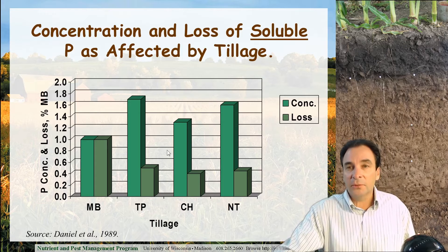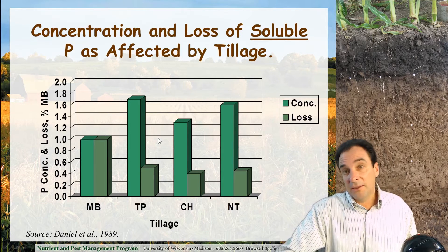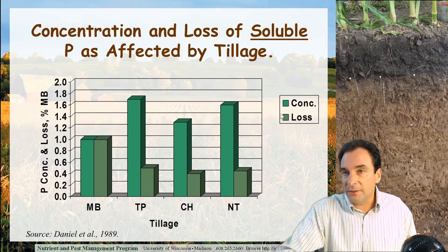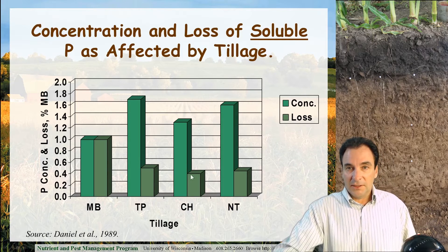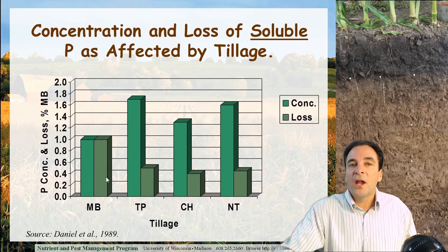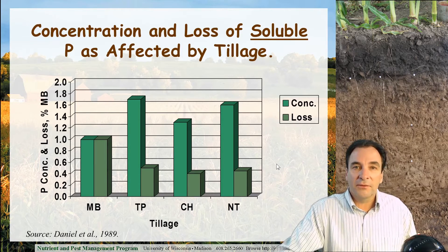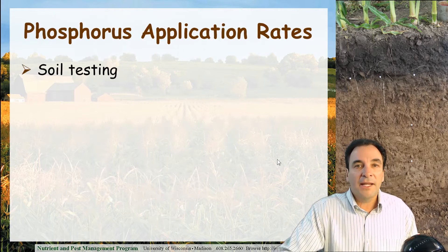However, because we're significantly reducing runoff loss and soil loss with these conservation tillage systems, the parameter that matters — phosphorus loss or phosphorus loading — is significantly reduced with all these conservation tillage systems relative to moldboard plowing. So conservation tillage systems are one of many erosion control and runoff control practices for reducing the loss of phosphorus from agricultural landscapes.